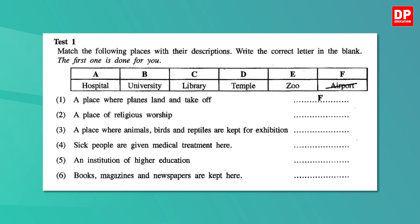Let's look at Test 1 of the 2018 paper now. Here you have to match the places given with their descriptions. As you can see the first one is done. If you study the way the first one is done, you can understand that you are to write only the correct letter of the answer. Let's read the first description: a place where planes land and take off. The answer is airport. How do we decide the answer? Look at the key words in the sentence: place, planes, land and take off. If you know at least one of these key words, you can guess the answer. It is the answer F, so F is written on the dotted lines in front of the first description.